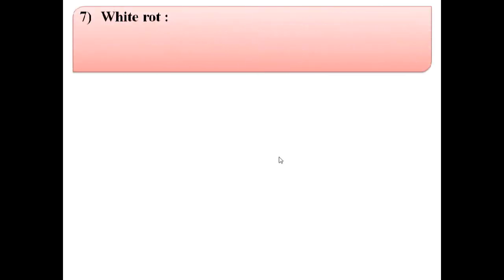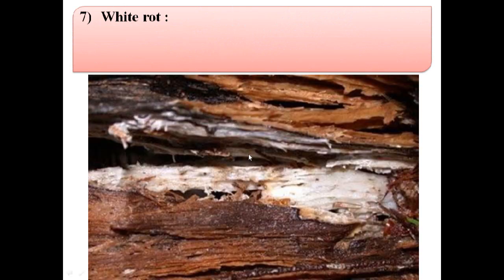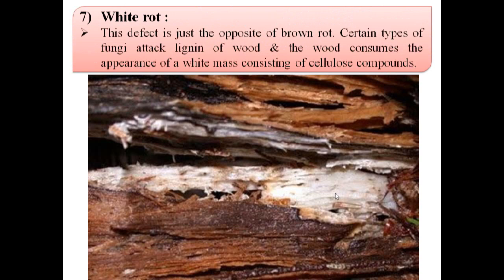Last defect due to fungi is white rot. This defect is just opposite to the brown rot. Certain types of fungi attack lignin of wood and the wood assumes the appearance of a white mass consisting of cellular compounds. In this image we can see white rot.